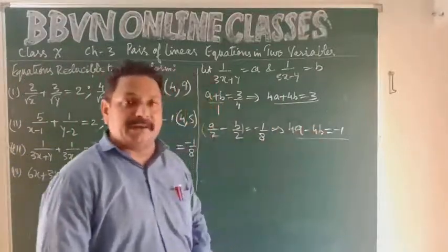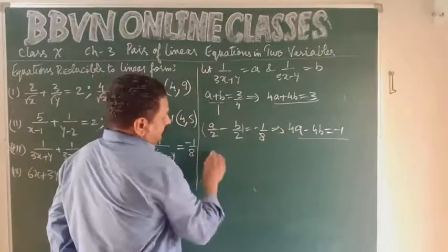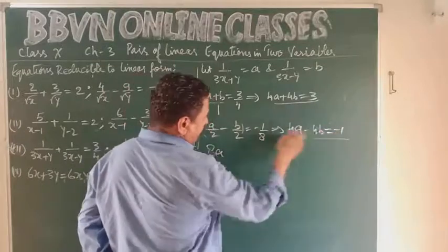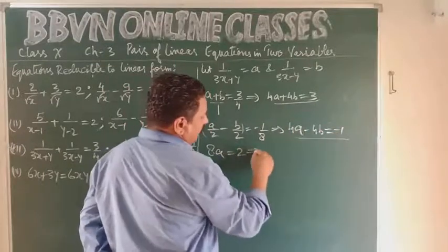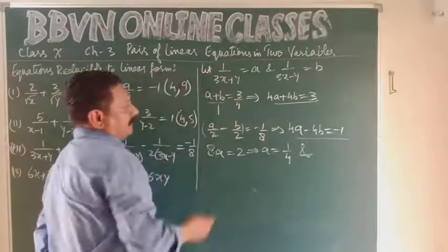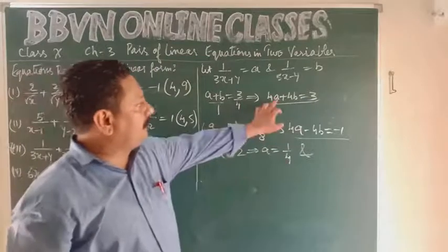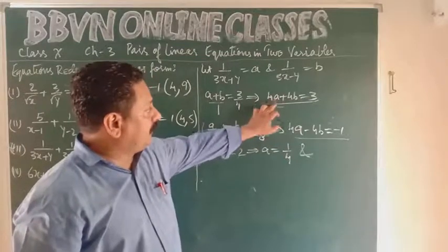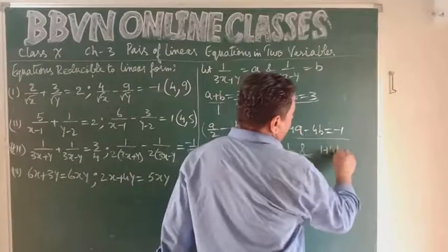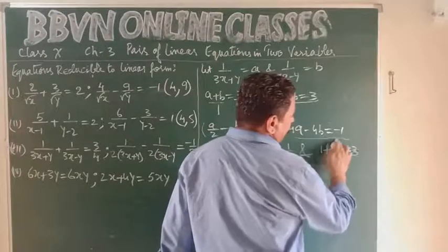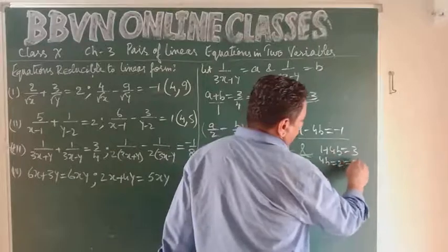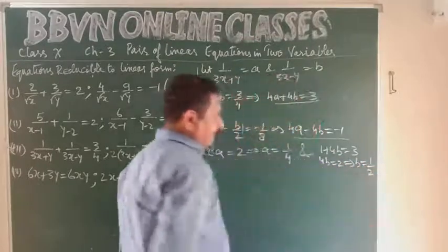Adding the two equations: the 4b terms cancel. 4a + 4a = 8a, and -1 + 3 = 2 (from the right-hand sides). So 8a = 2, giving a = 1/4. Substituting a = 1/4 back: 4×(1/4) + 4b = 3, so 1 + 4b = 3, giving 4b = 2 and b = 1/2.